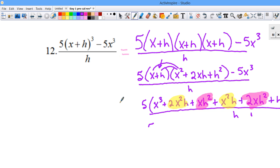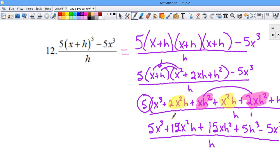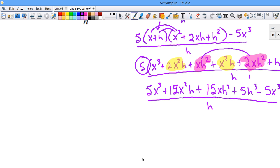This will be 5x cubed plus 2 plus 1 is 3 of these times 5 is 15. And then plus, this makes 3 of these times this 5 is 15 again plus 5h cubed minus 5x cubed over h. Let's extend my page again.